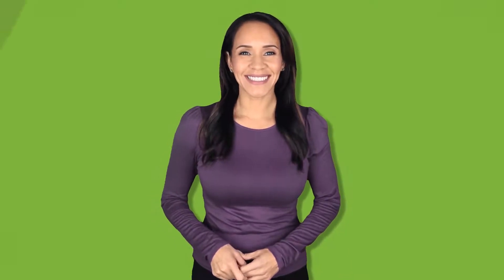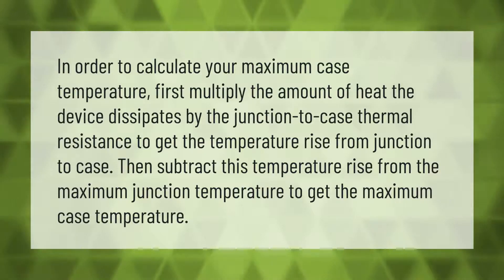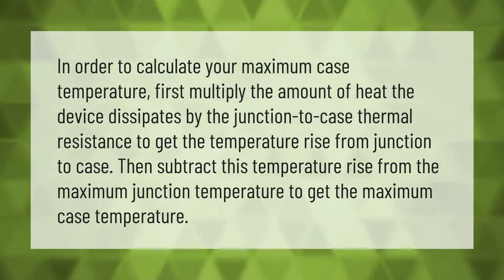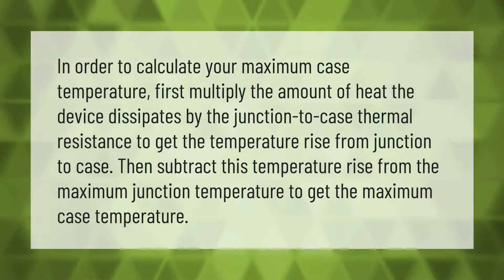In order to calculate your maximum case temperature, first multiply the amount of heat the device dissipates by the junction-to-case thermal resistance to get the temperature rise from junction to case. Then subtract this temperature rise from the maximum junction temperature to get the maximum case temperature.